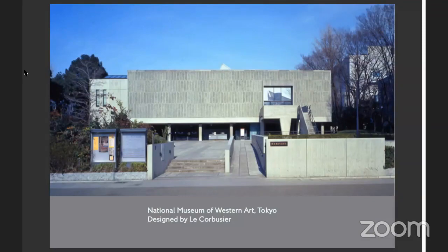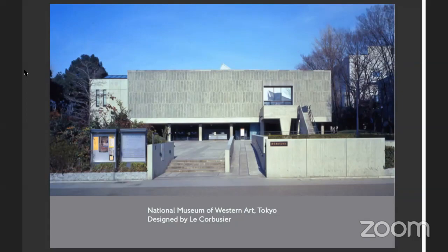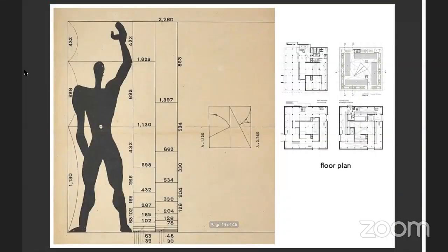So you're in Tokyo, having visited a normal Japanese household. Now one of the bigger buildings to visit is the National Museum of Western Art in Tokyo, established about 60 to 70 years ago — around 1960 — designed by the famous architect Le Corbusier. This is Le Corbusier's famous Modulor — it's a square format.